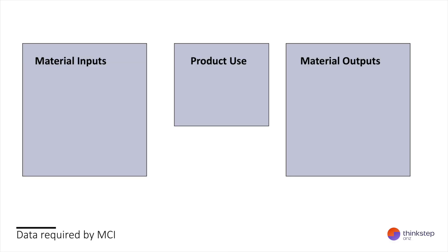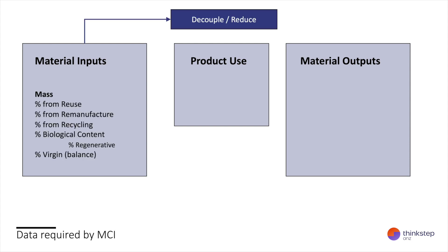To calculate the material circularity indicator, I like to visualize this as a set of material inputs, a set of material outputs, and a couple of indicators in the middle that reflect how the product is used. On the input side, we're quantifying how effectively we've decoupled from using virgin or non-regenerative materials. To quantify this, we need the mass of each material and the percentage of each material from reused, remanufactured, or recycled sources. For the remaining virgin materials, we need to know if any are biological materials and how much of those are sourced from a supply that could be considered regenerative.